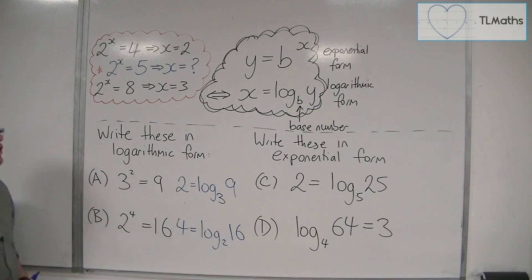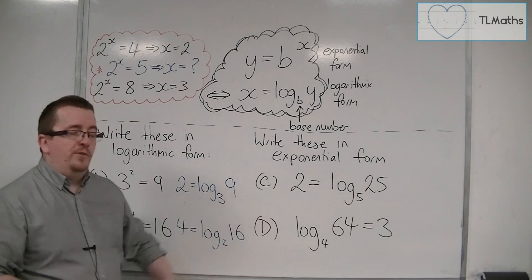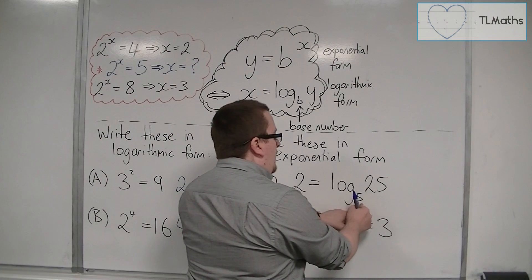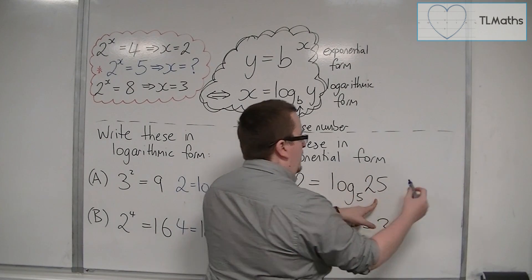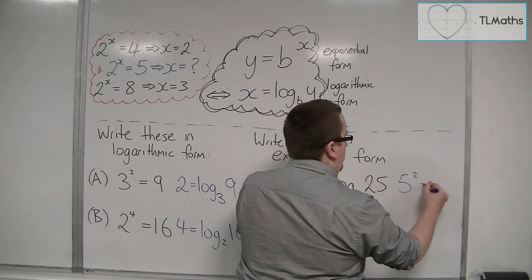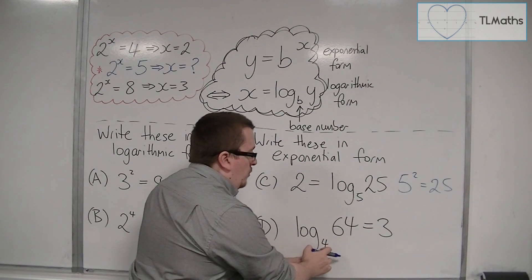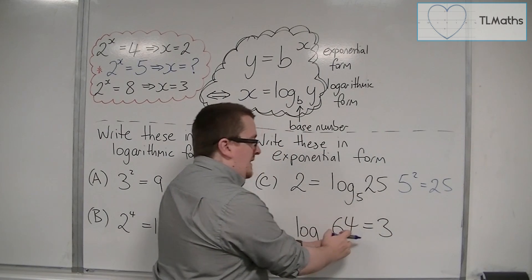Let's try it from the other direction. So from exponential form to logarithmic form. So here we have 5 to the power of 2 is equal to 25, and then 4 to the power of 3 is equal to 64.